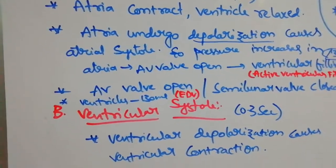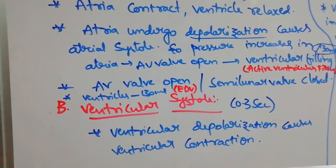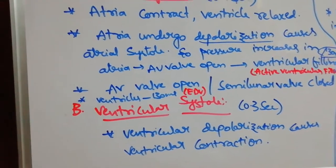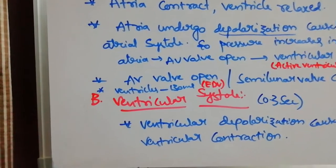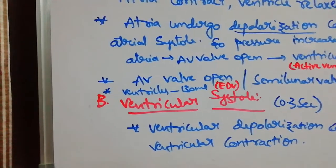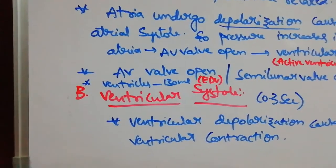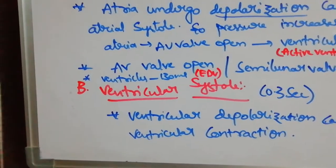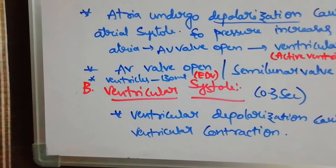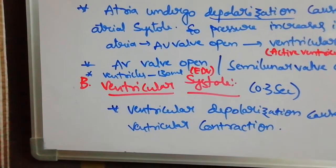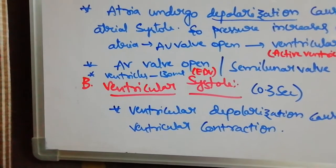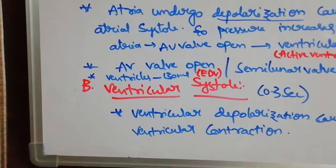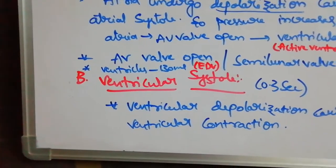During atrial systole, the AV valves are open and the semilunar valves are closed. The total volume of blood present in the ventricle at this point is 130 ml. This is called the end diastolic volume of the ventricle.